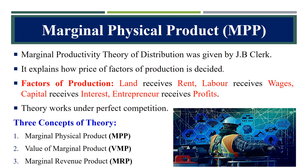The theory of marginal productivity of distribution was given by J.B. Clarke. In this theory, he explains how the price of various factors of production is decided.